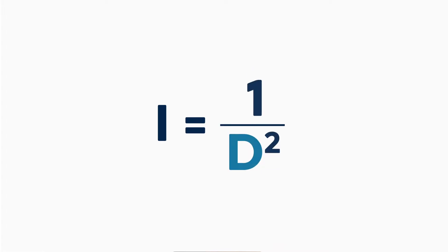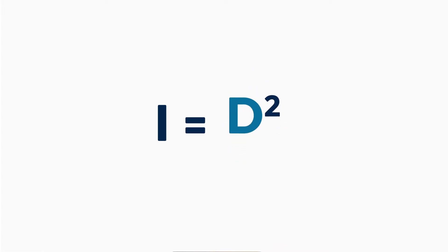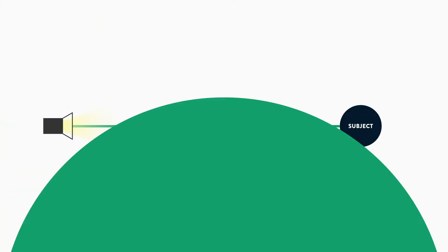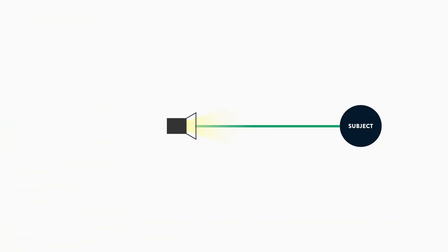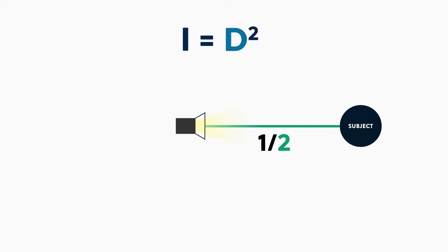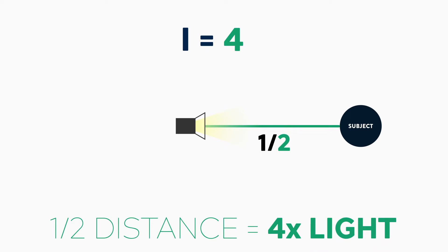What if we want to move a light closer and not further away? Well, there's a fairly simple way to work that out — we just flip the equation around the other way. So let's say we want to halve the distance between the light and our subject, taking it from one meter to half a meter. The intensity equals 2 squared, or 4. So we have four times the amount of brightness than we had before.